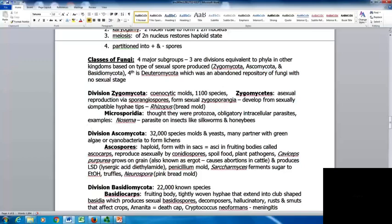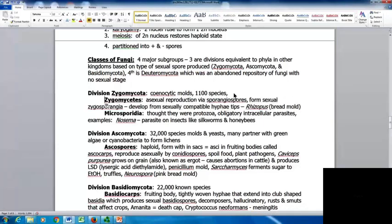The division Zygomycota includes coenocytic molds. About 1,100 species identified. Zygomycetes have asexual reproduction via sporangiospores and form sexual zygosporangia from sexually compatible hyphae tips. An example is Rhizopus, which is a bread mold.